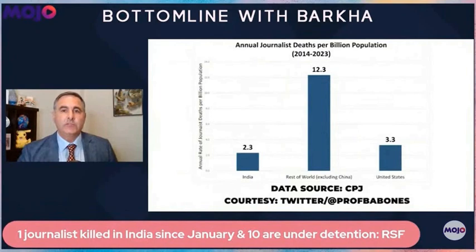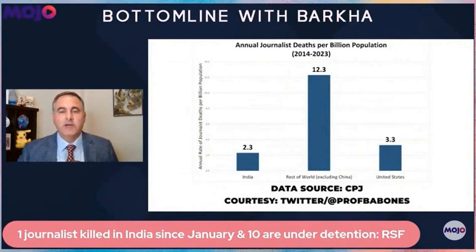Contrast that with the actual murder rate in India, which is 21 per million population. So, in other words, journalists are only about one-fifth as likely to be killed in India as the general population is likely to be killed in India.